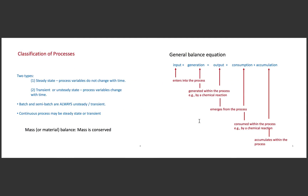The general equation for a chemical process is: input plus generation equals output plus consumption plus accumulation. The input is what is being entered into the chemical process. The generation is what is being generated or applied through the process by a chemical reaction. The output is what is being produced, consumption is what is being consumed, and accumulation is everything that has accumulated within the process.